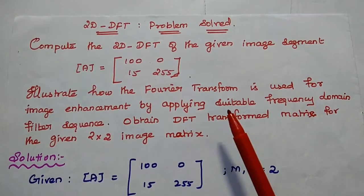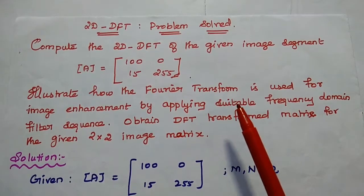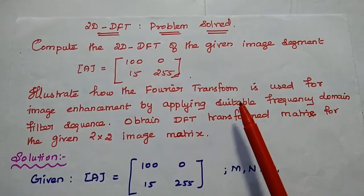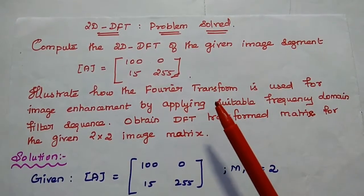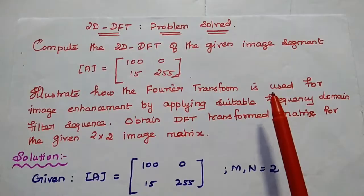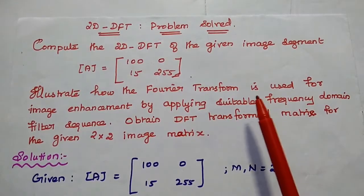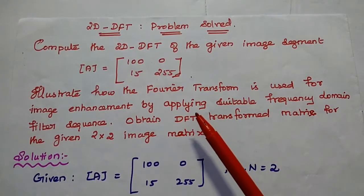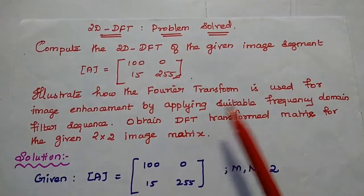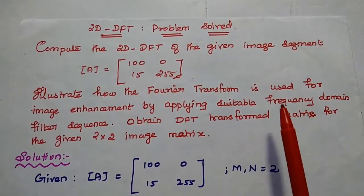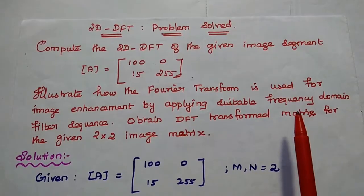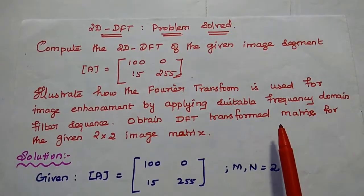Dear students, now we are going to solve one problem in two-dimensional discrete Fourier transform. Compute the 2D DFT of the given image segment: A matrix is equal to 100, 0, 15, 255. Illustrate how the Fourier transform is used for image enhancement by applying a suitable frequency domain filter sequence.